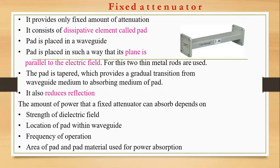So for 3 dB or 6 dB attenuators, there should be a 6 dB difference between the input and the output on the receiver side. Now this dissipative element — the total element where the power will be dissipated — is called a pad. This is also a waveguide element, placed such that its plane is parallel to the electric field.